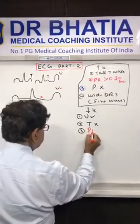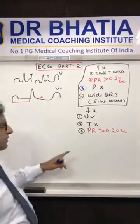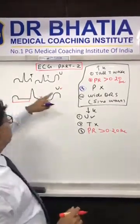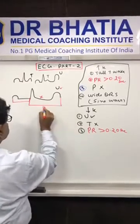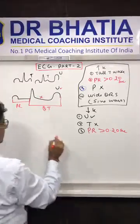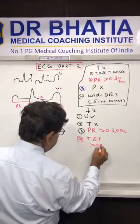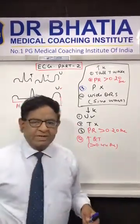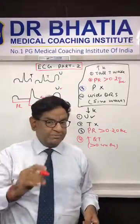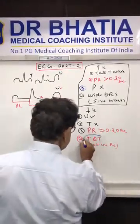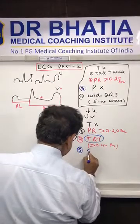Third, there is prolonged PR interval — more than 0.20 seconds. Point to be noted, prolonged PR interval was also seen in hyperkalemia. And this prolonged QT interval is the most important finding. You may forget any other finding, but you must not forget the prolonged QT interval. And finally, there is some sagging of the ST segment — ST sagging.